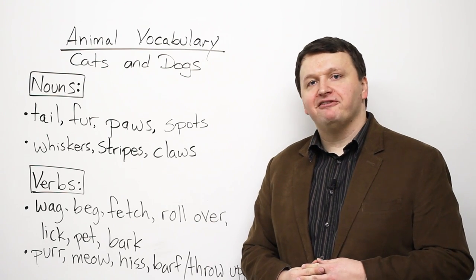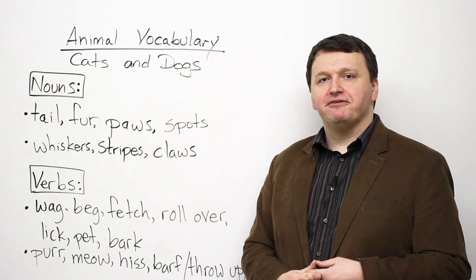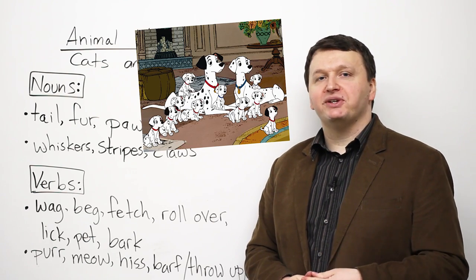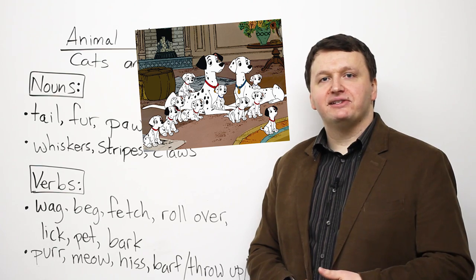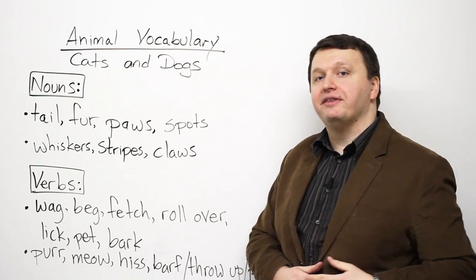Spots. We have many dogs which have spots on them. Think of the film 101 Dalmatians. A Dalmatian has lots and lots of spots on them, so they're little black areas on the animal.